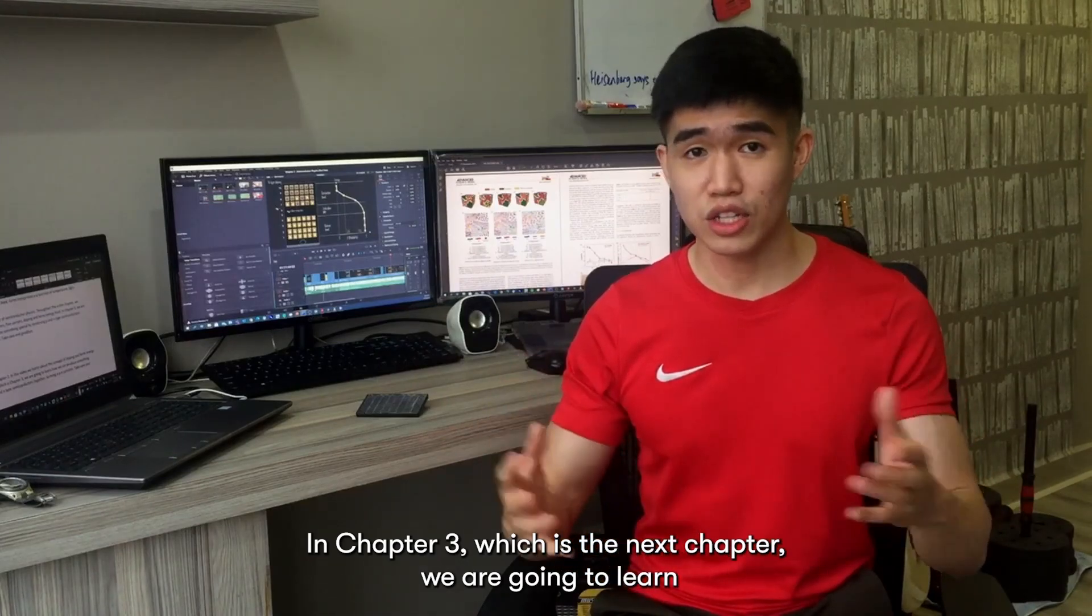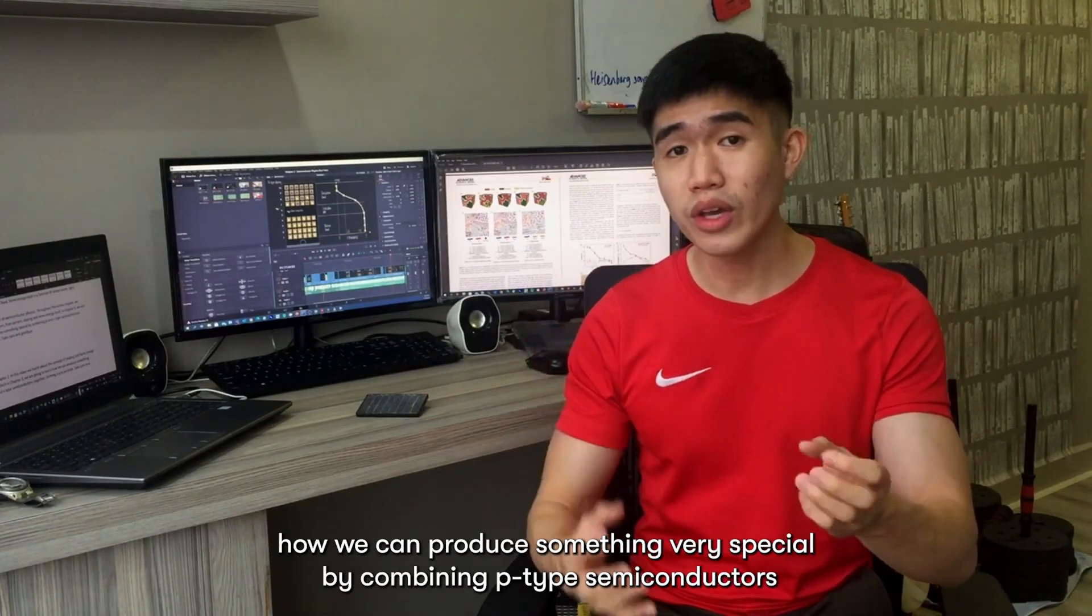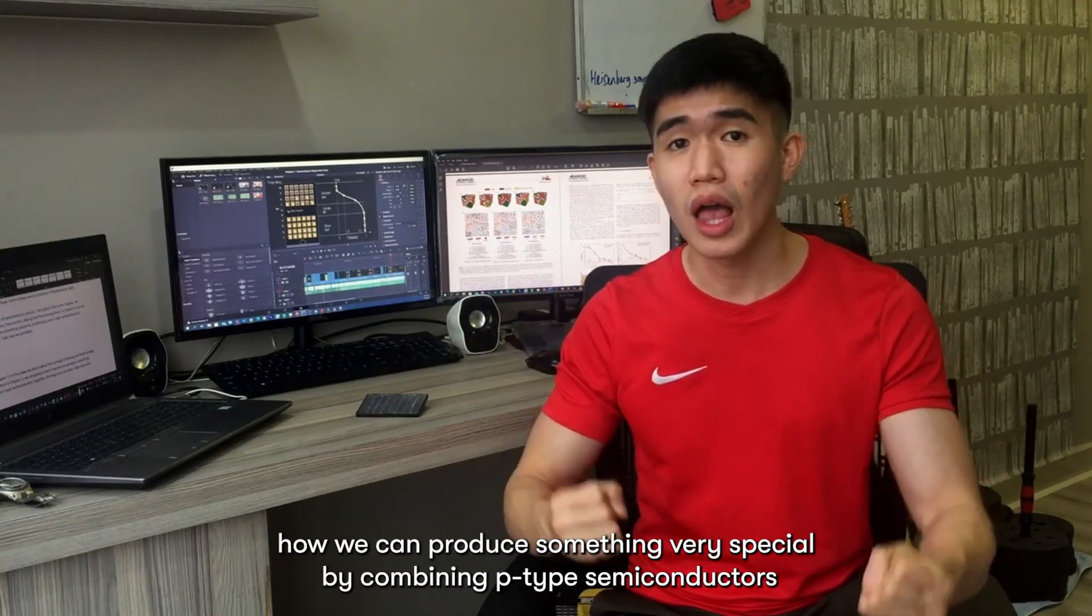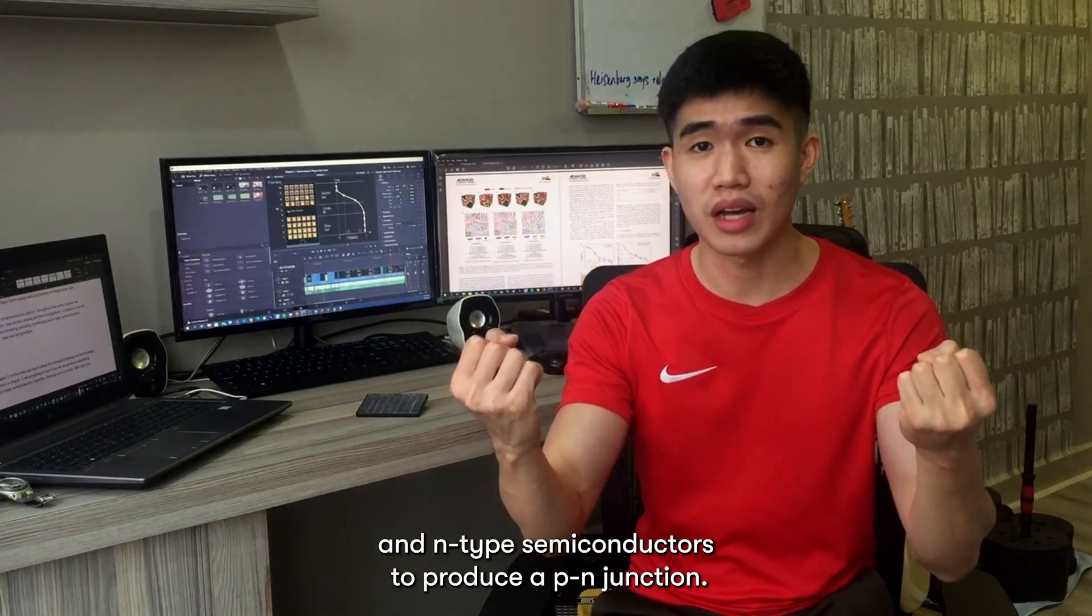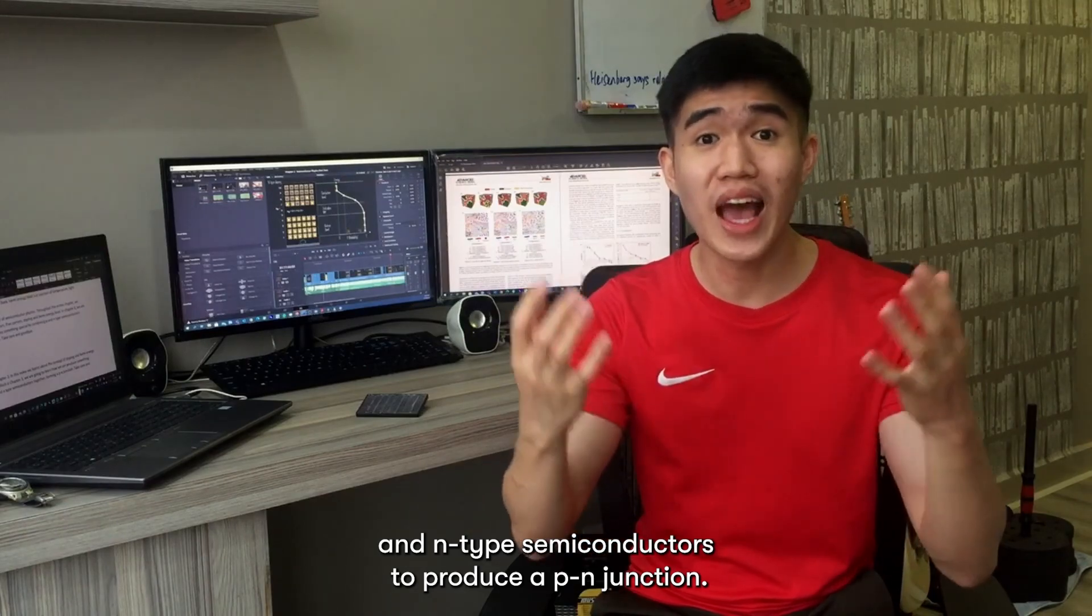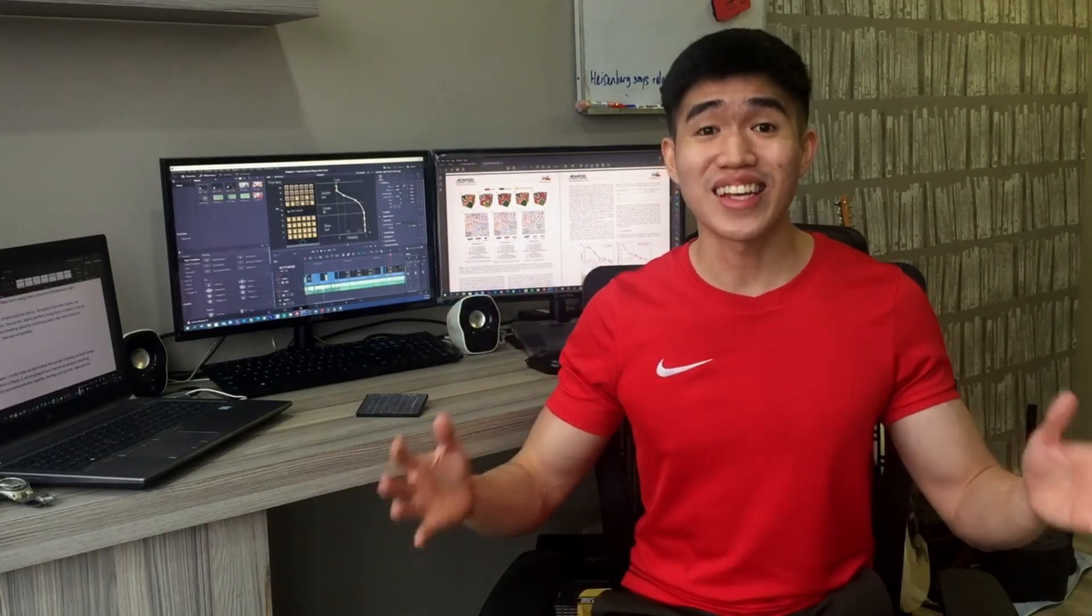In chapter 3, which is the next chapter, we are going to learn how we can produce something very special by combining p-type semiconductors and n-type semiconductors to produce a p-n junction. Take care and goodbye.